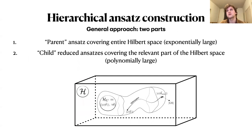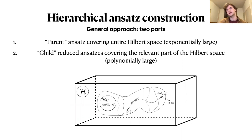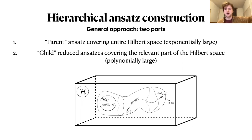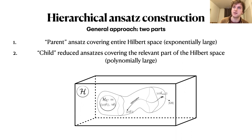The approach I'll present is a top-down approach inspired by classical approximation methods for quantum many-body physics like tensor networks. A nice property of tensor networks is that by increasing the so-called bond dimension you can in principle cover the entire Hilbert space — for example with matrix product states. This is the kind of property I want to start from: a construction for the ansatz that can in principle cover the entire Hilbert space.